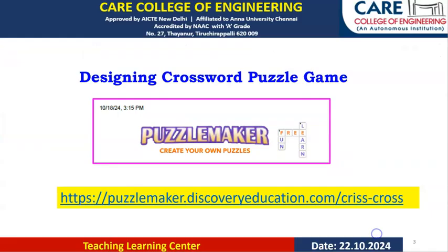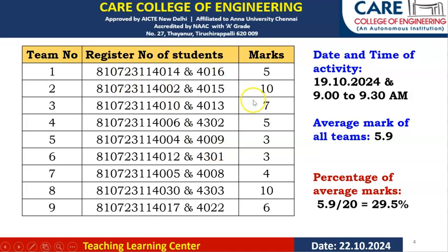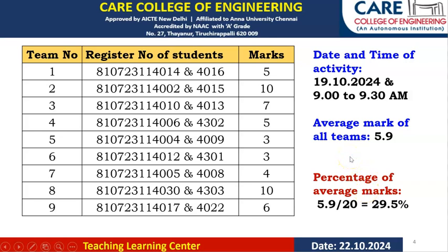The team marks for all nine teams are shown here. The activity was conducted on 19/10/2024 from 9 to 9:30 AM in the first period. Initially, 10 minutes were given for students to glance at their notebooks and revise terminologies. Then they answered the puzzle with a maximum of 20 minutes allowed. The average team mark was 5.9, approximately 6 out of 20, giving an average percentage of 30%. This indicates that basic recall — the fundamental cognitive process of remembering — was difficult for them.